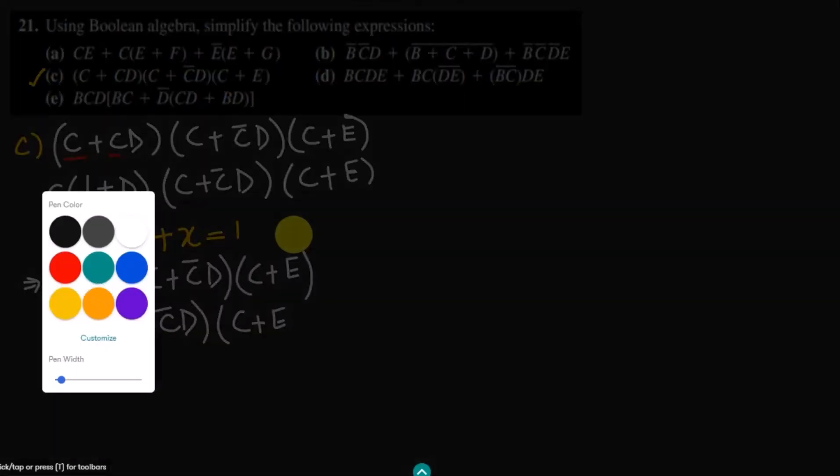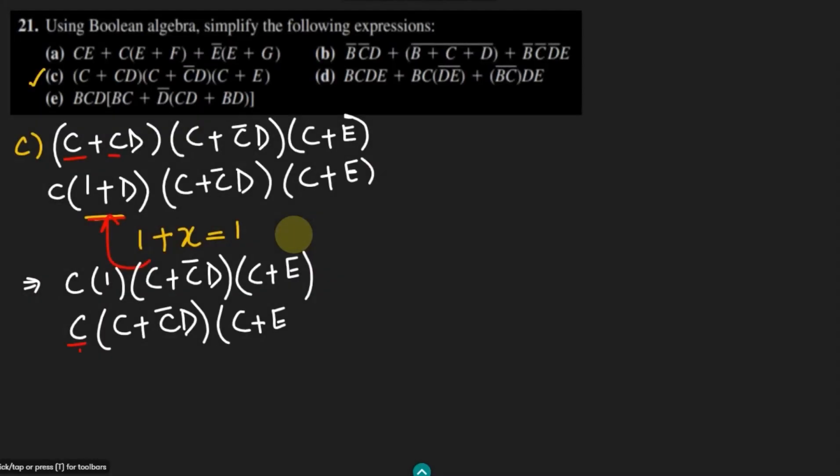Now, taking this term, this C, and multiplying it with all the terms which are inside here. What will I get? I will get here C dot C plus C dot C prime D, and here we will have C plus E.